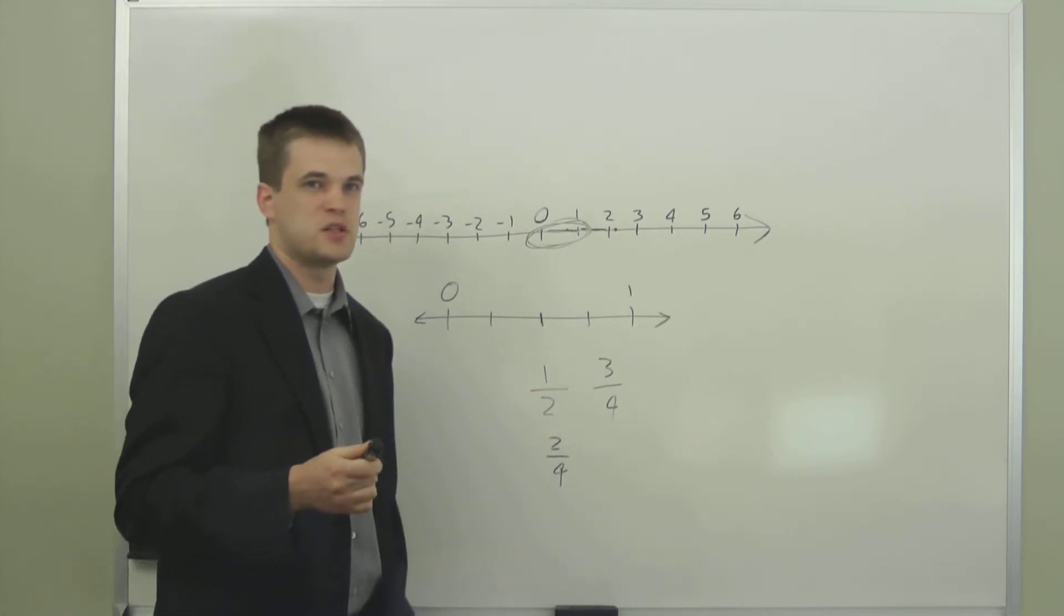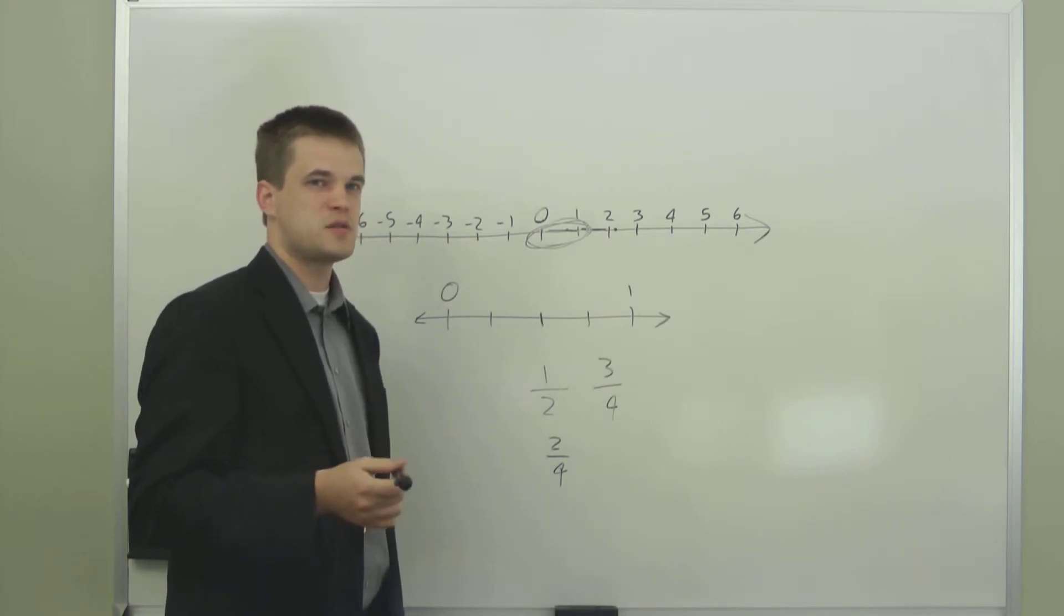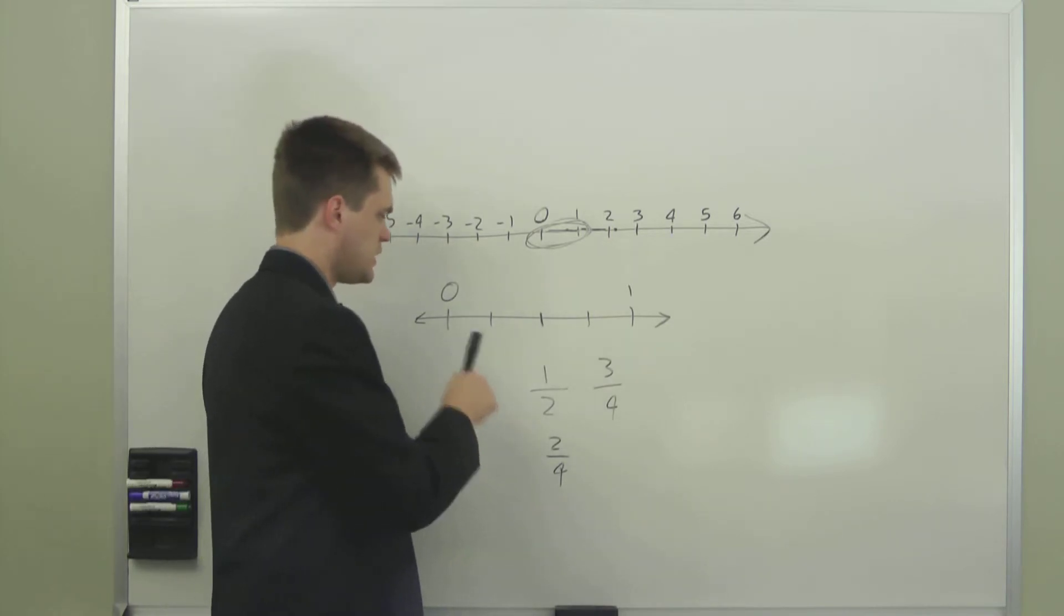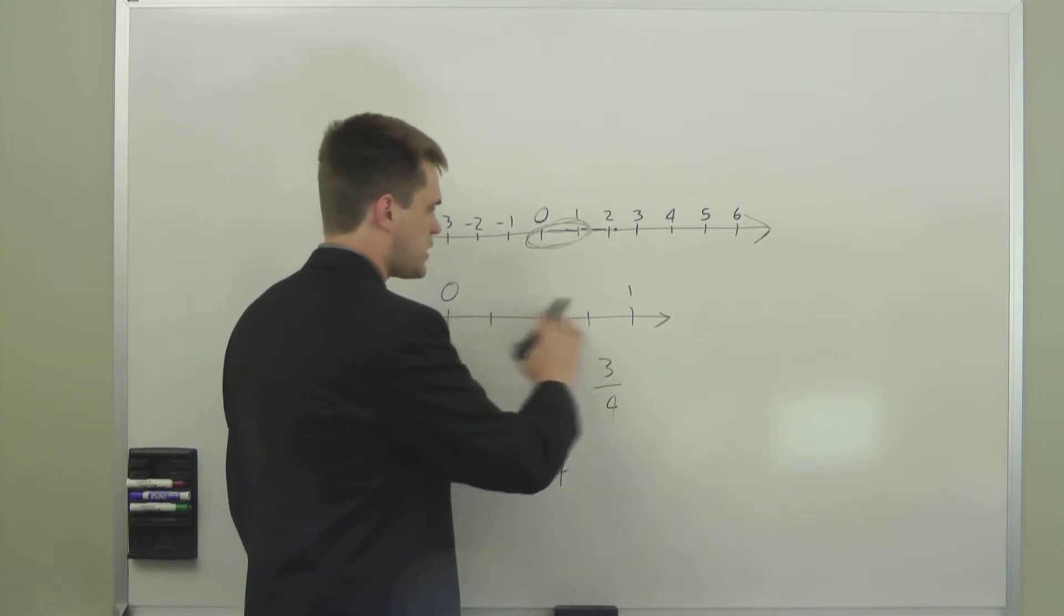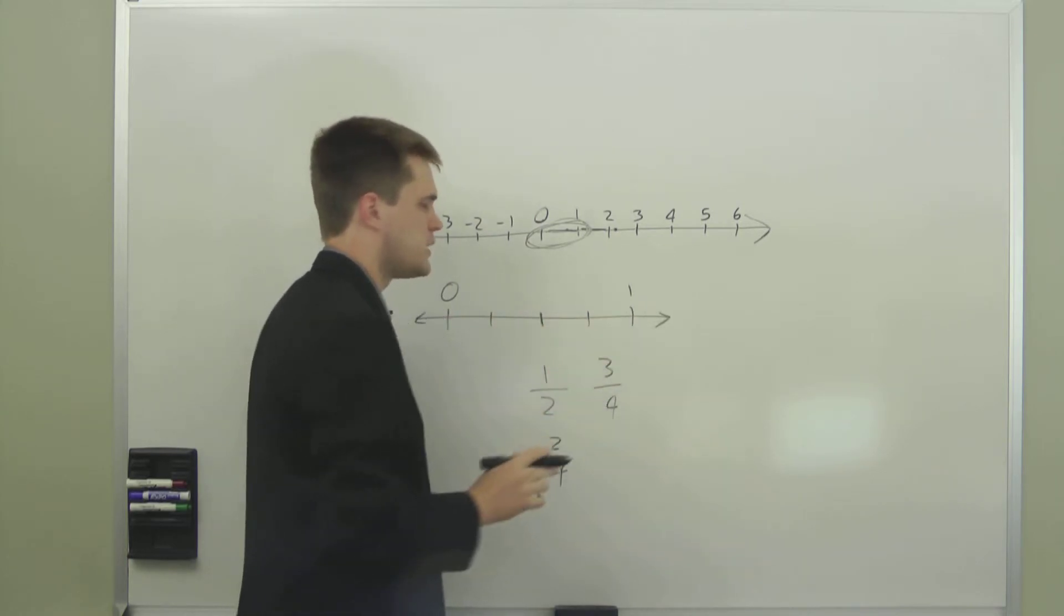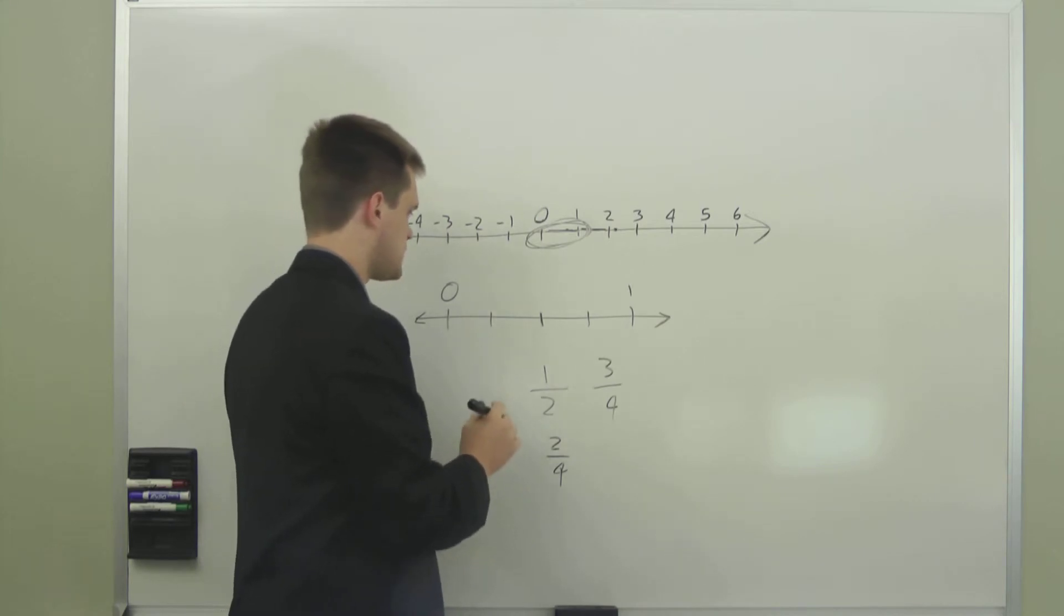This provides a good transition into decimals. A decimal representation is essentially dividing up the space between zero and one into ten different segments.